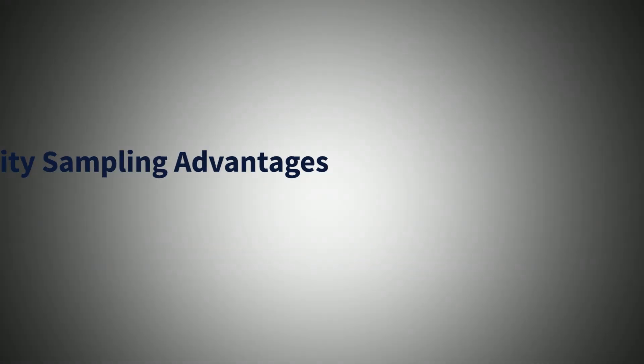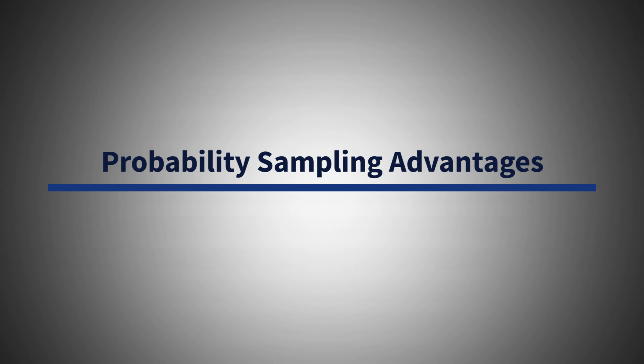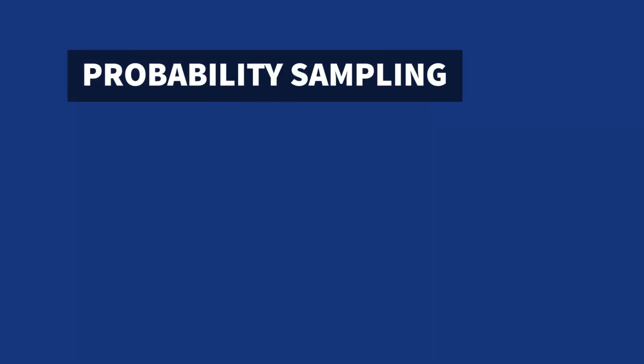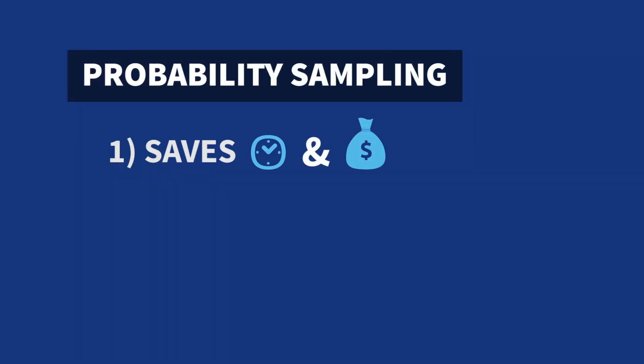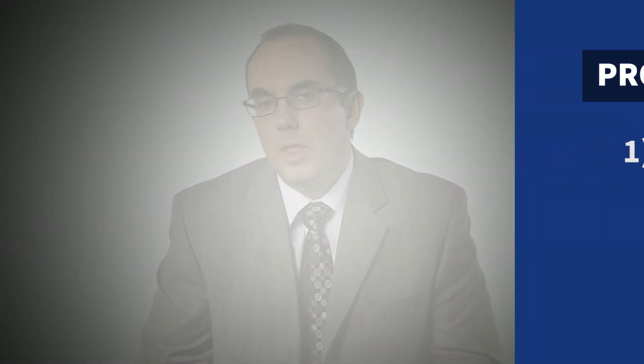Besides a proven track record, probability sampling has several advantages. First, sampling a population saves an enormous amount of time and money compared to trying to contact everyone in a population. The 2010 U.S. Census, which attempted to contact every household, cost approximately $13 billion and needed to hire 635,000 temporary workers.